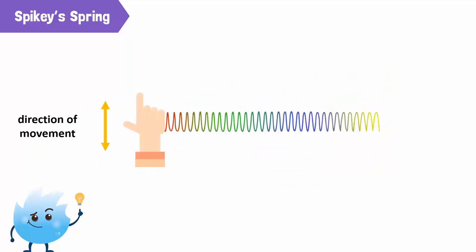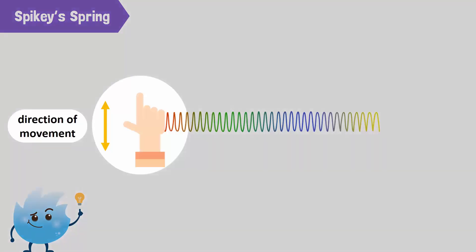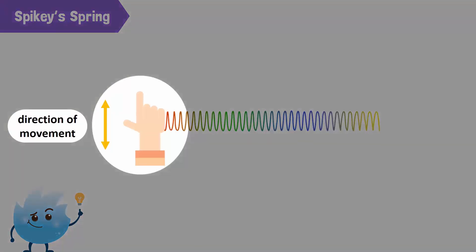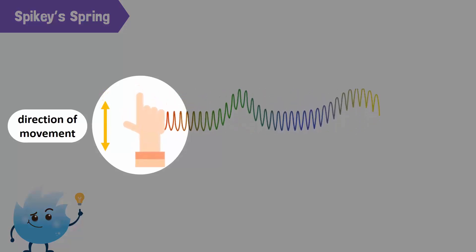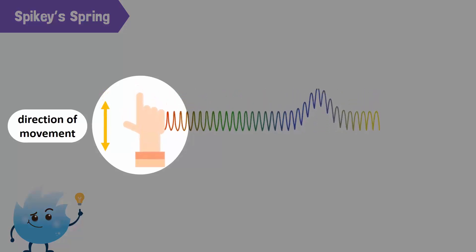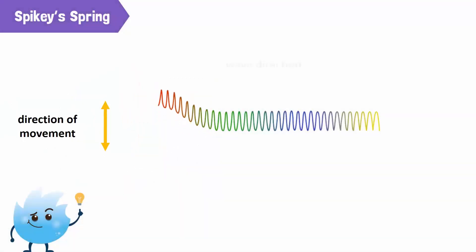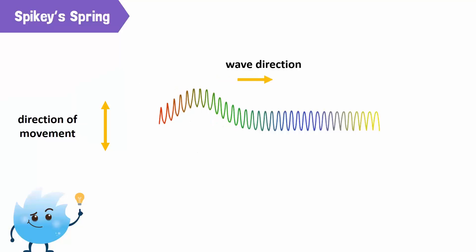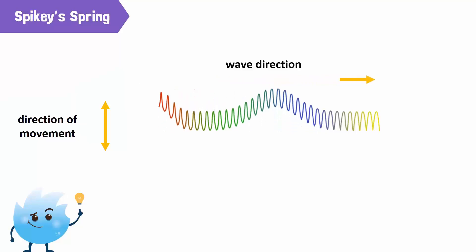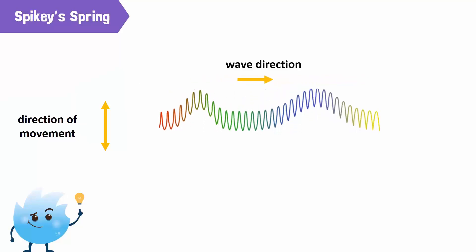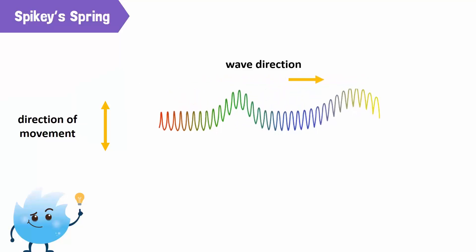Let's look at Spiky's spring again. First, focus on the hand movement. What do you see? It is moving up and down. Now, look at the whole spring. In which direction is the whole wave traveling? It is moving away from the hand towards the right.